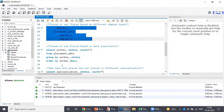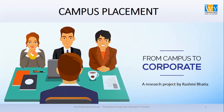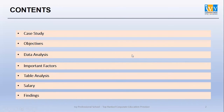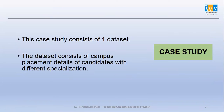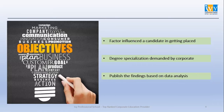Let's move to the business part now. This is my project: Campus Placement — From Campus to Corporate. The contents include case study, objectives, data analysis, important factors, table analysis, salary, and findings. The case study consists of one dataset containing campus placement details of candidates with different specializations. The objectives are: factors that influenced a candidate in getting placed, degree specialization demanded by corporates, and to publish the findings based on the analysis.